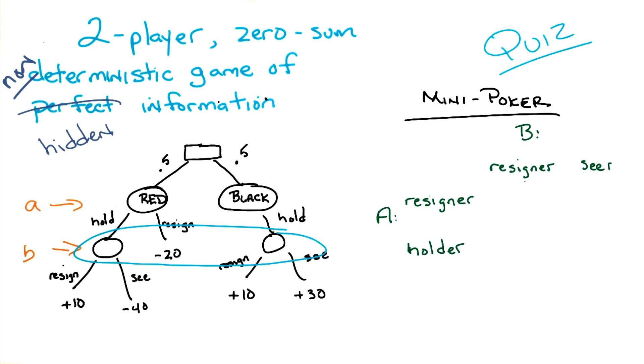So, resigner versus resigner. If A is a resigner, that means whenever A gets a red card, A resigns. Yes. And that would be a negative 20. Yep.